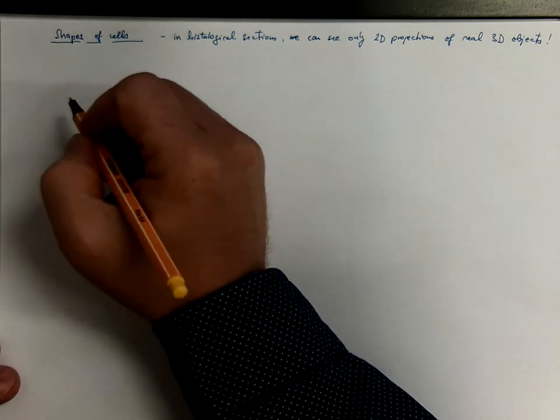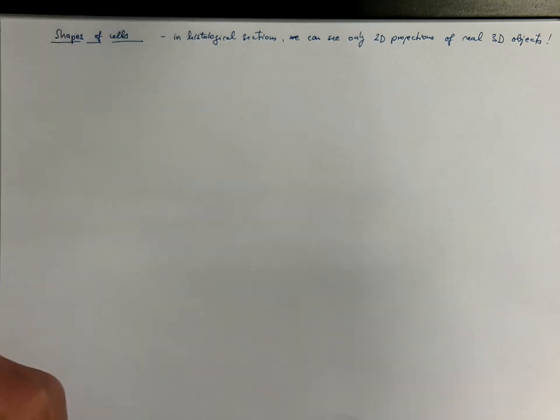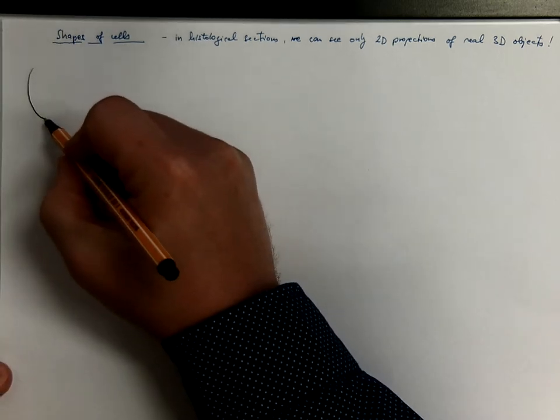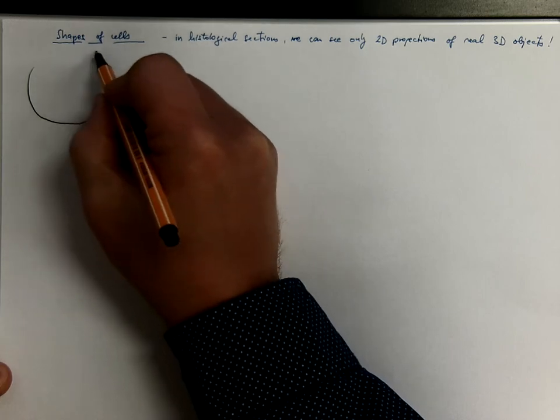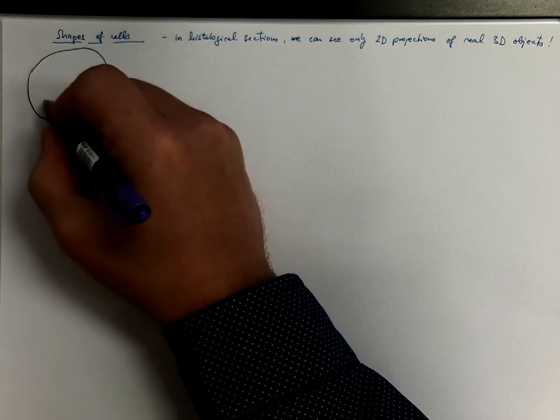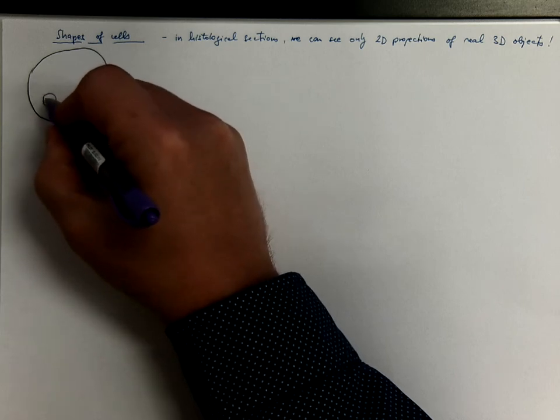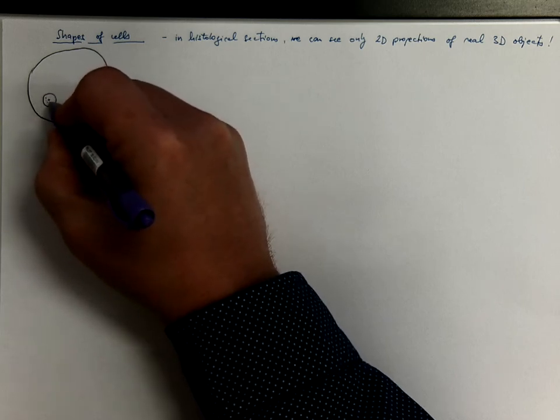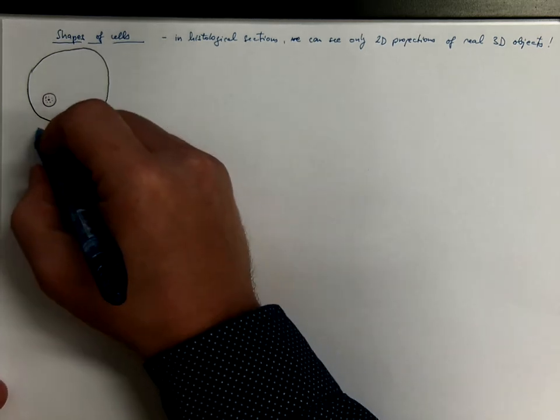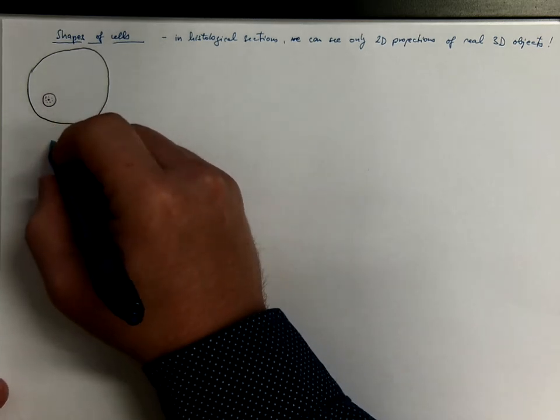So let's start with a spherical shape, when the cell has a shape of a sphere. We will always provide examples from human body. So this will be mature oocyte with the spherical shape.